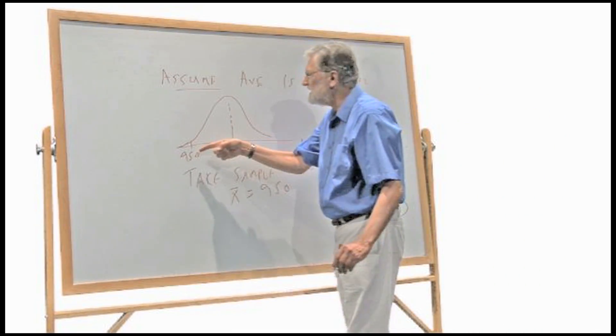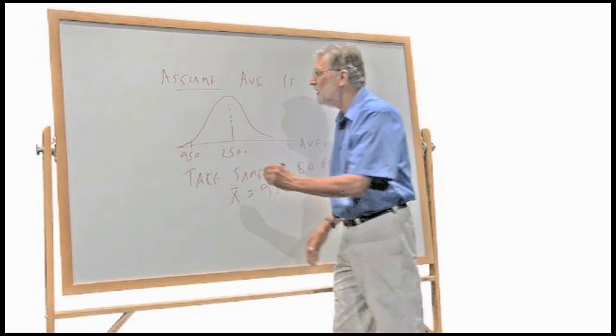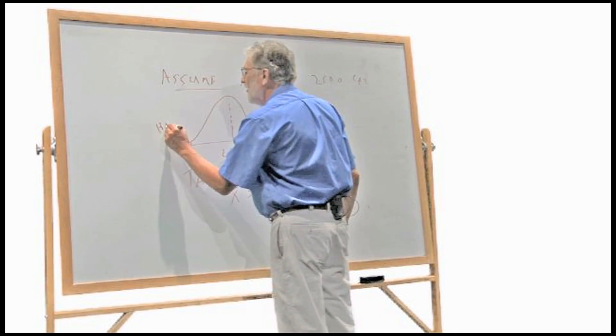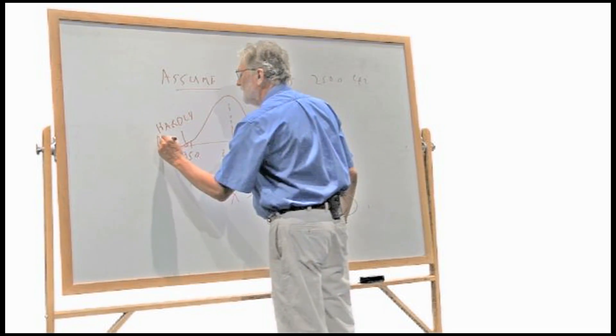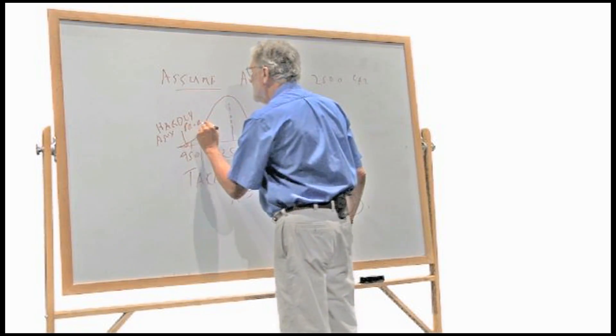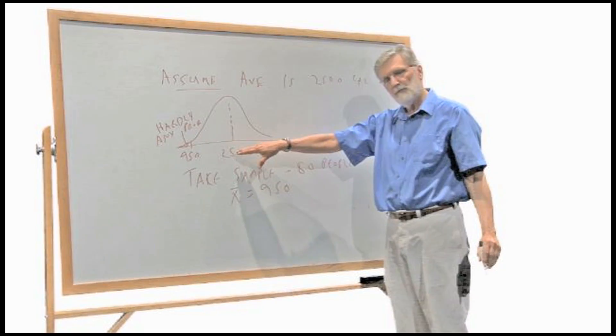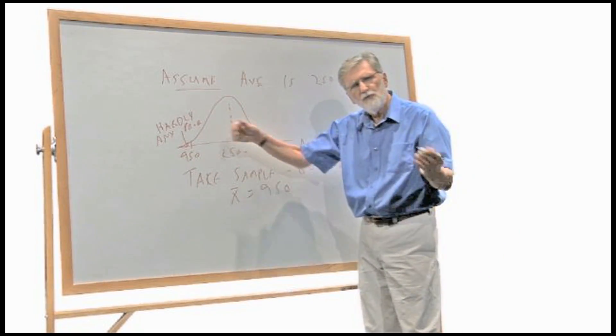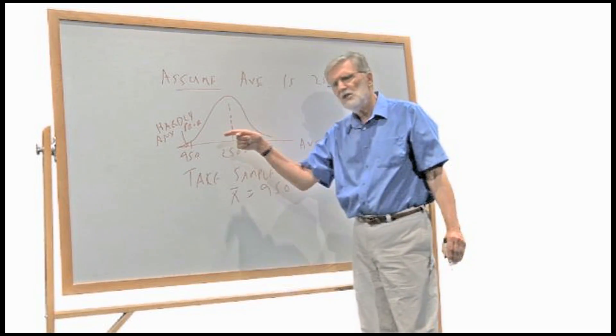Let's suppose that this 950 is so far over on this curve that there's hardly any probability over here. In other words, if we're in fact on this curve, if this is right, if these people are not malnourished, then what we've seen is a real unusual sample. We got a real low number.